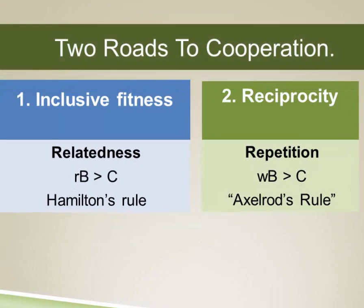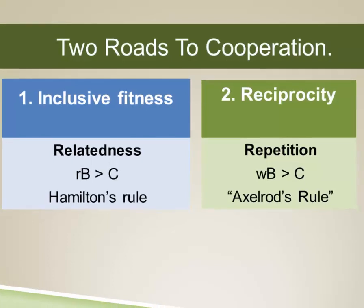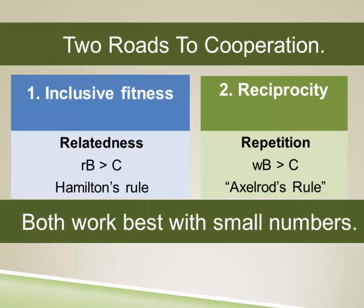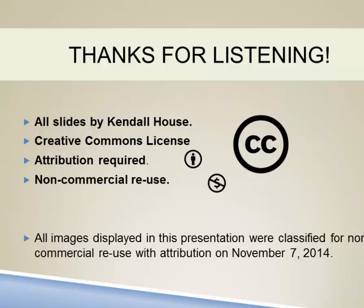So there are two roads to cooperation: inclusive fitness and reciprocity. We can think about reciprocity in two forms — direct reciprocity and indirect reciprocity. Whichever form we use, these two roads to cooperation appear to work best when we're in small-scale human communities, where people interact frequently, have a lot of relatives, and have knowledge about one another's reputations. Thank you for listening.